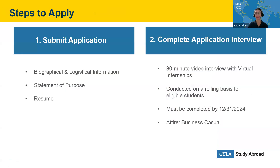What I really want to emphasize is that we take your interests and goals into consideration to make sure you are placed in a meaningful virtual internship. The application is a two-step process. First, you submit the online application with biographical and logistical information, a statement of purpose, and your resume. The statement of purpose is a pre-formatted template with short responses and character limits — we want to understand why you're interested in an internship, your career goals, and your interests. Make sure your resume is up to date; our program pages offer the VMock tool from the Career Center to help you edit and submit your best resume.